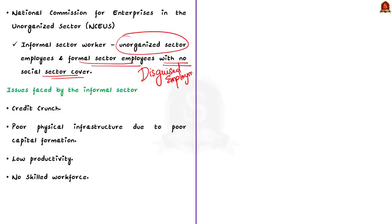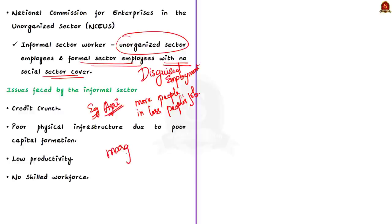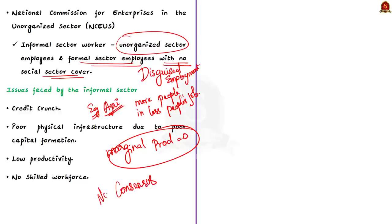What is disguised unemployment? Disguised unemployment means that more people are engaged in a job which can be done with less people — normally seen in agriculture where the whole family is involved. It means extra people can be removed without affecting the productivity. That is, their marginal productivity is zero. By looking at all these definitions, you can understand that even at the definition stage of the informal sector, there is no one proper consensus. This is the first issue faced by the informal sector.